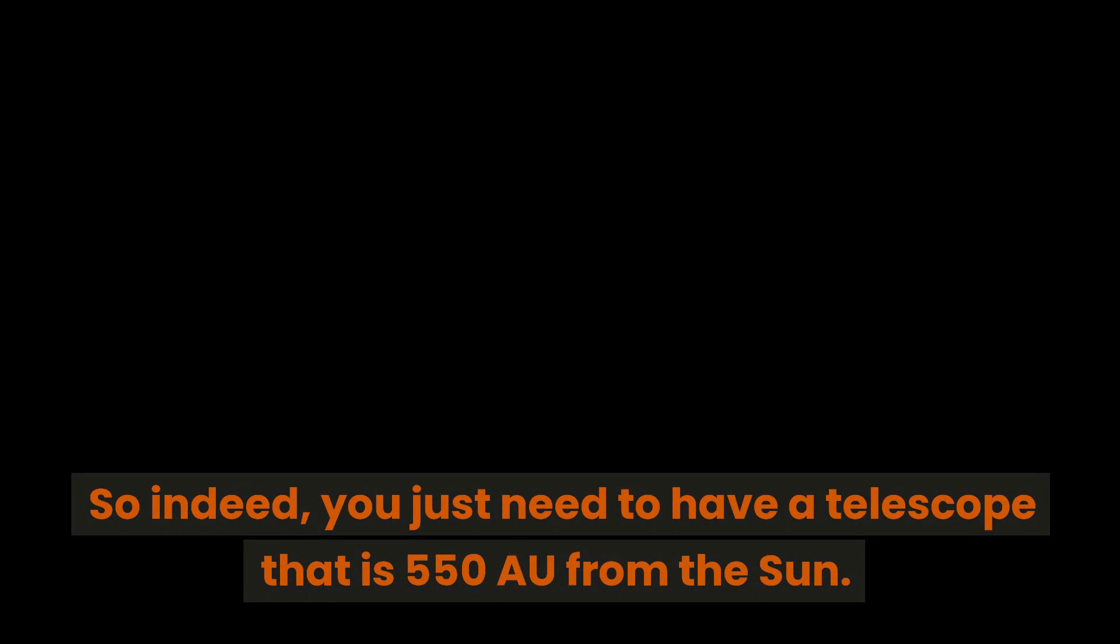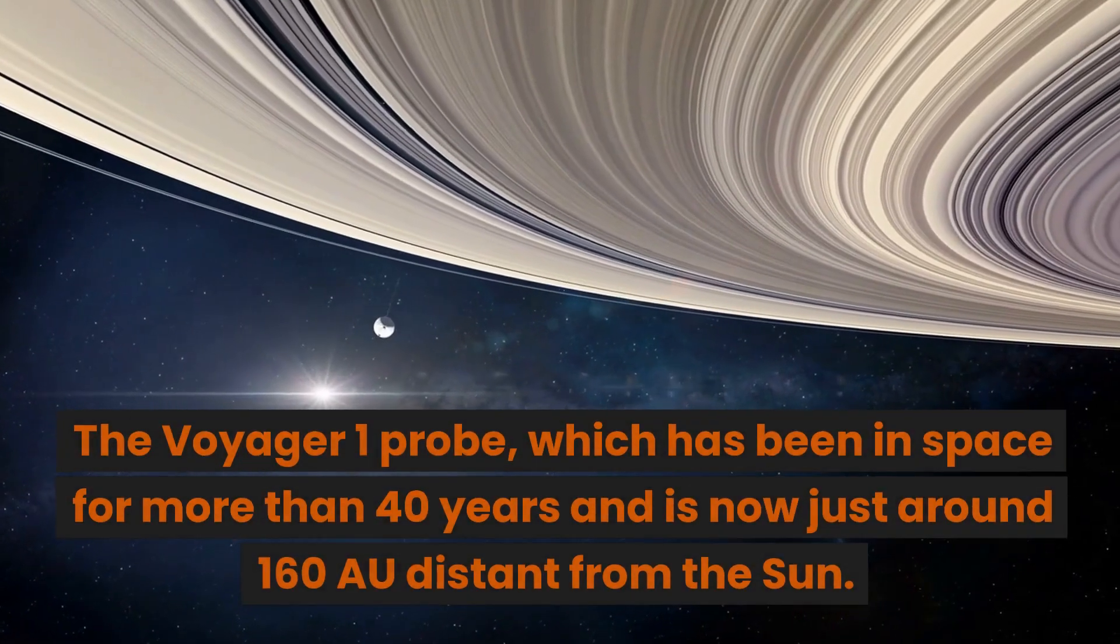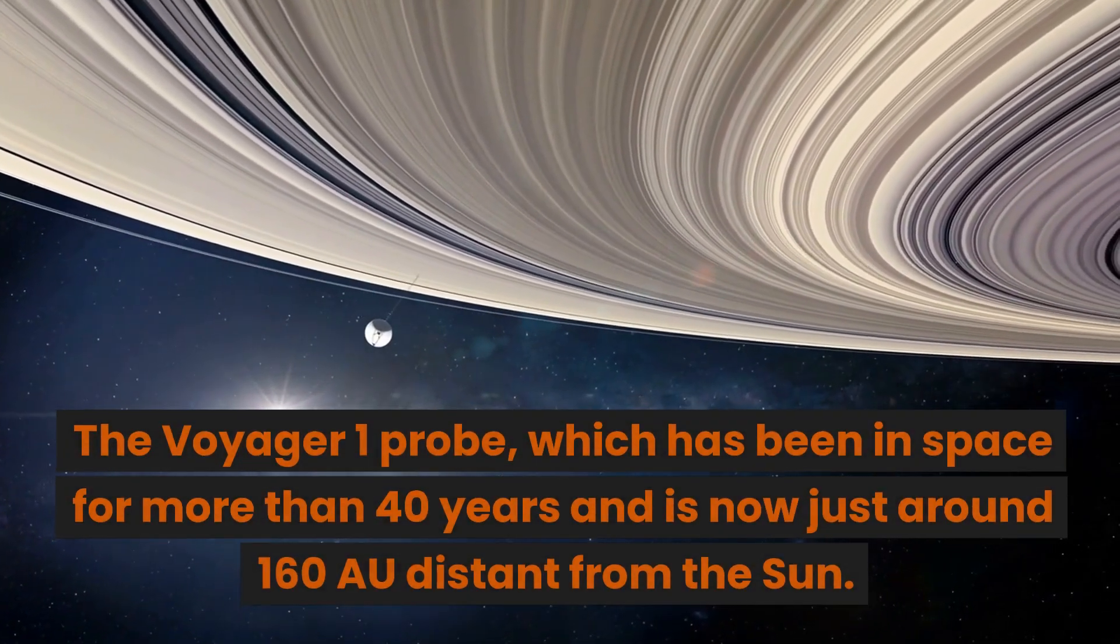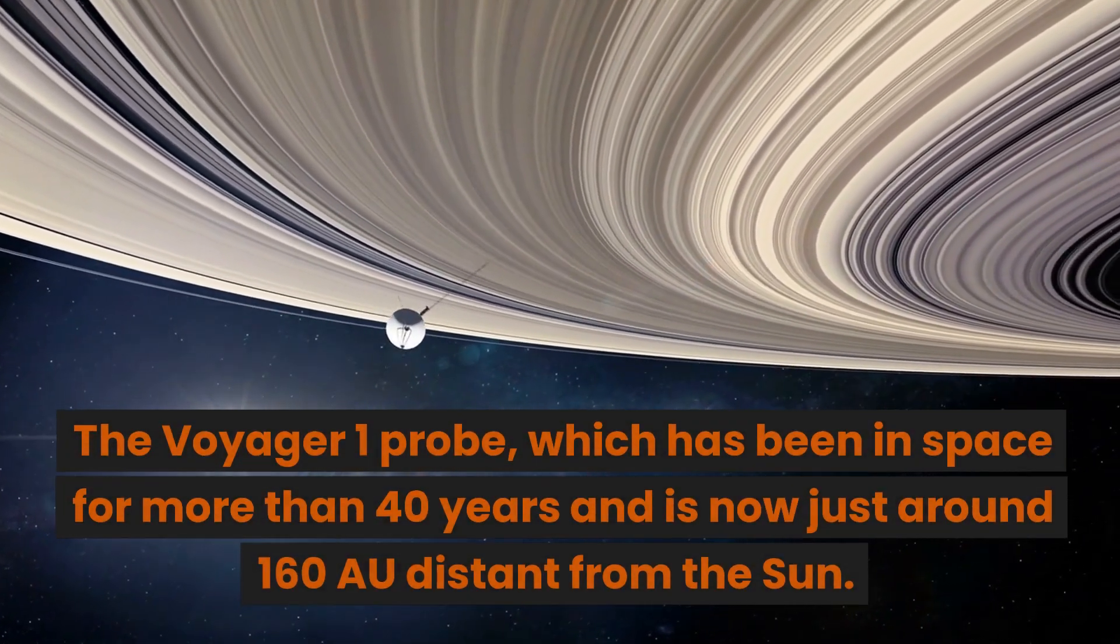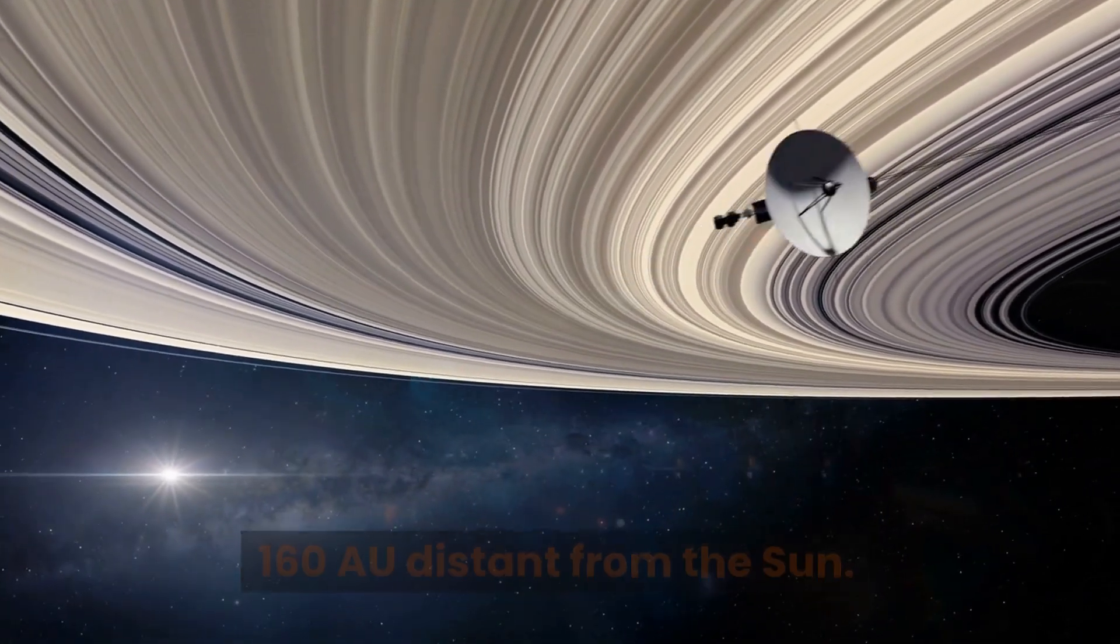So indeed, you just need to have a telescope that is 550 astronomical units from the sun. The Voyager 1 probe, which has been in space for more than 40 years, is now just around 160 astronomical units distant from the sun.